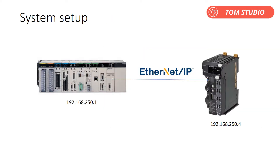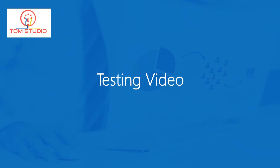For testing, we simply set up the PLC Ethernet module IP address as 192.168.250.1, and the NXEIC202 Ethernet IP coupler IP address as 192.168.250.4.